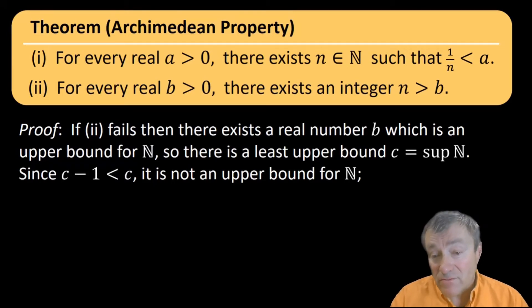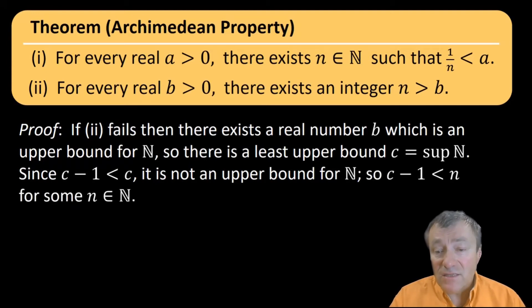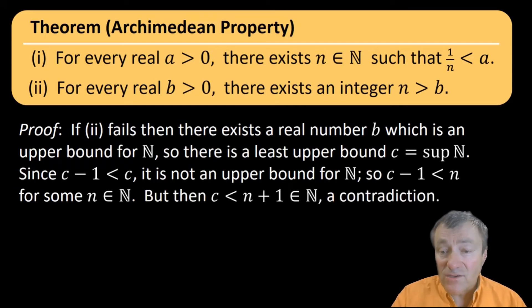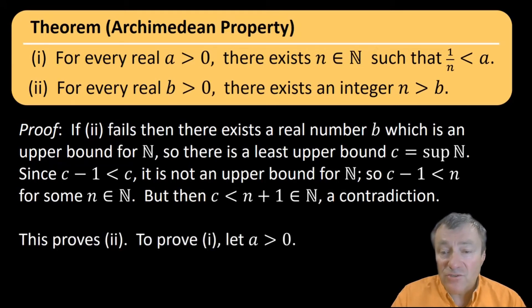So what does that mean? It means that there is a natural number n which exceeds c minus one. But then you can just add one to both sides, you'll get that the natural number n plus one is bigger than c. So c is no longer an upper bound for the natural numbers. That would be a contradiction. So with that, we have a proof of part two.